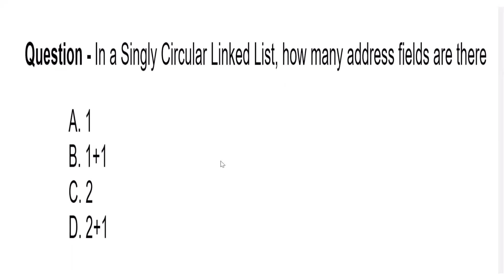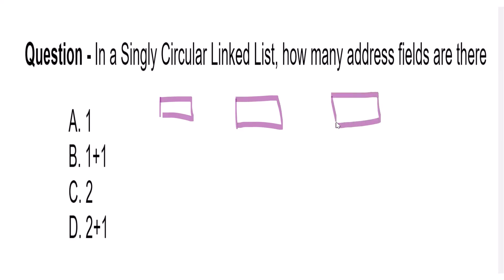In this question we are asked: in a singly circular linked list, how many address fields are there? So we know that nodes in a linked list can be divided into two parts — one has data and the other has the address pointing to the next node.